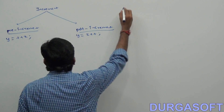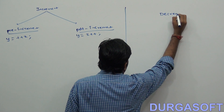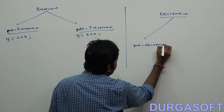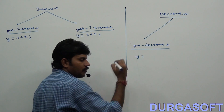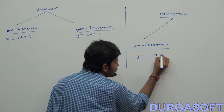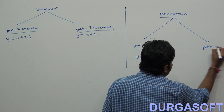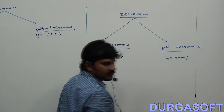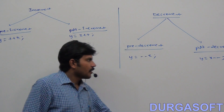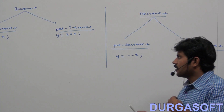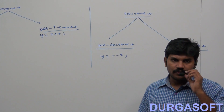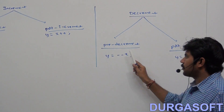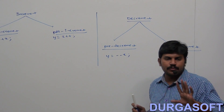The same thing is applicable for decrement operators. For pre-decrement: y equals --x. For post-decrement: y equals x--. So to summarize: there are two increment operators — pre-increment and post-increment — and two decrement operators — pre-decrement and post-decrement.